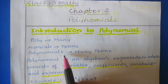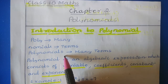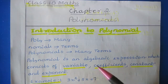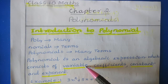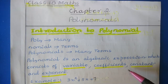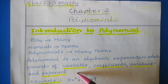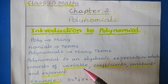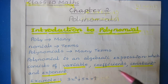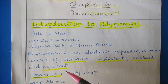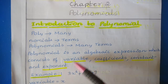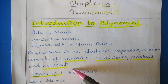A polynomial is an algebraic expression which consists of variables, coefficients, constants, and exponent values. Let us see what is a variable, what is a coefficient, what is a constant, and what is an exponent.